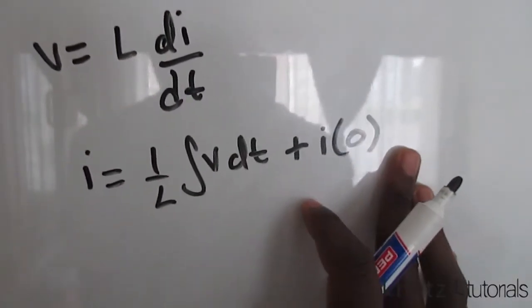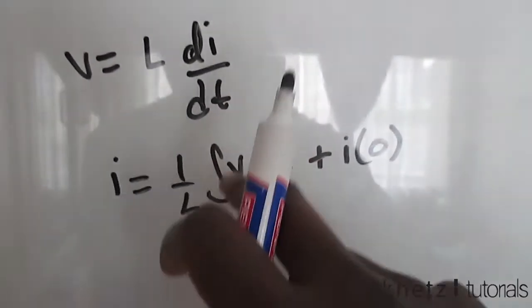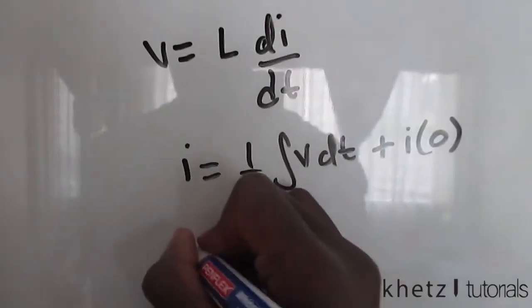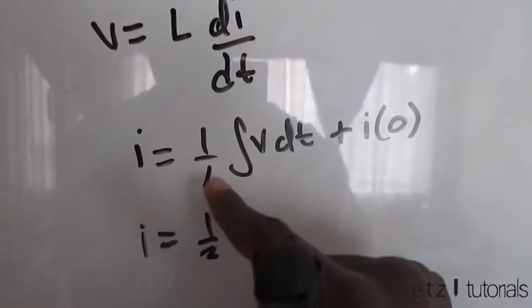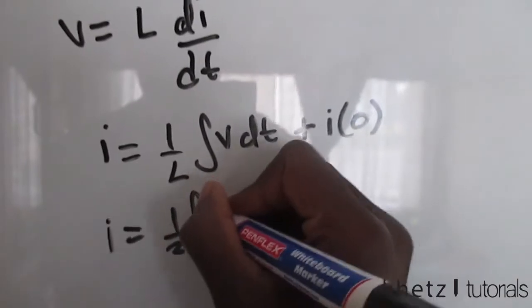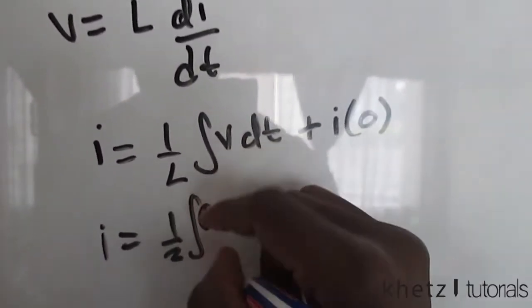So now that we have this formula we are basically just going to integrate and substitute the limits from zero to four seconds as given to us in the question. So let's do that. So i equals to a half, the two comes from the value of the inductor as given to us in the question, an integral of 10, let me just write this properly, 10 times (1 minus t) dt plus 2.